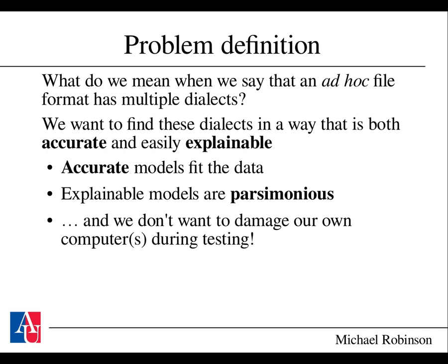The question is: what do we mean when an ad hoc file format like PDF or CSV, that doesn't have a formal specification, has multiple dialects? We want to find these dialects in a way that is both accurate and easily explainable. Accurate models have to fit the data, and explainable models should be parsimonious — not requiring excessive description and relatively easy to understand.